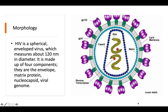The virus is composed of three components. The first is the envelope, which is the lipid bilayer. The second is the matrix protein. The third is the nucleocapsid. And there is also the genome. You can see the lipid bilayer, then the matrix protein, and then the nucleocapsid.